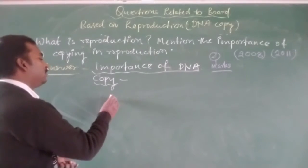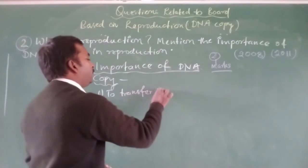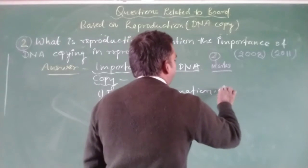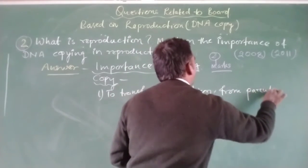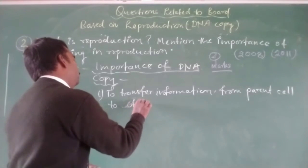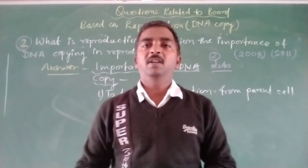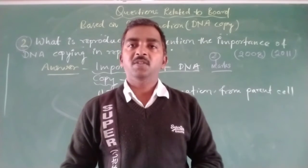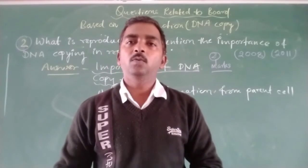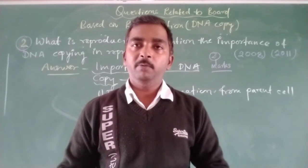The first importance of DNA copy is to transfer information from the parent cell to the offspring. DNA is the source of genetic information — information that is carried from parent to offspring for a particular body design. So DNA copy is essential to transfer this information.